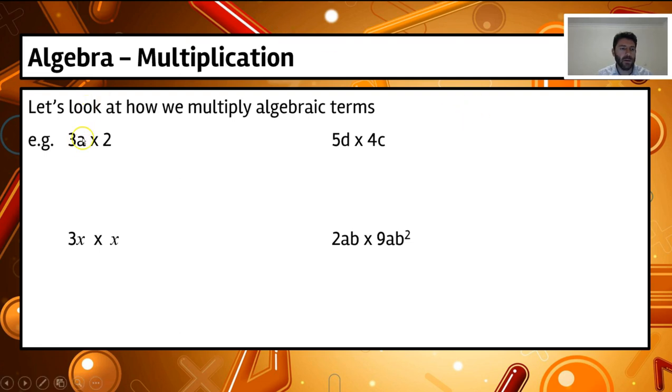If we have a look at the question here, we've got 3a times 2. The easiest way to think of multiplication when we have letters involved is basically we just multiply the numbers together in the expression, and then we multiply the letters together to get the final part of our expression.